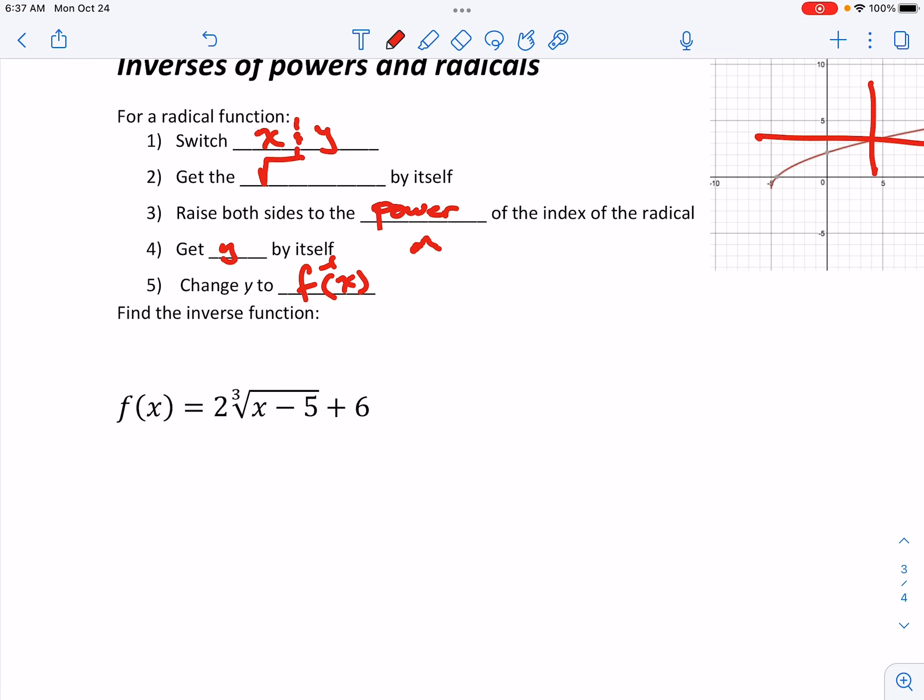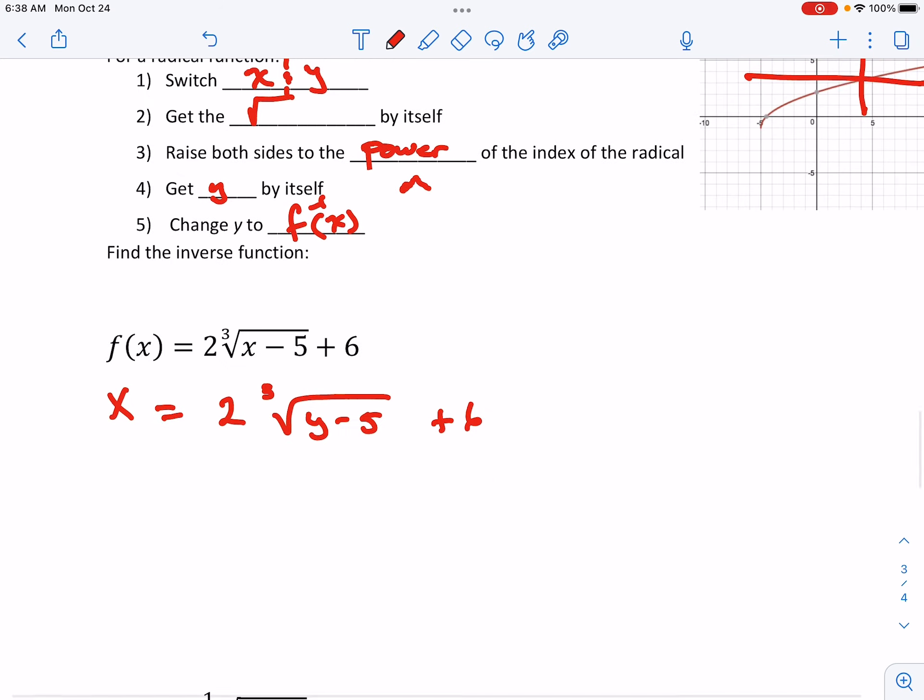So no restriction on the domain is necessary. We switch the x and the y. We get the radical by itself. PEMDAS backwards.